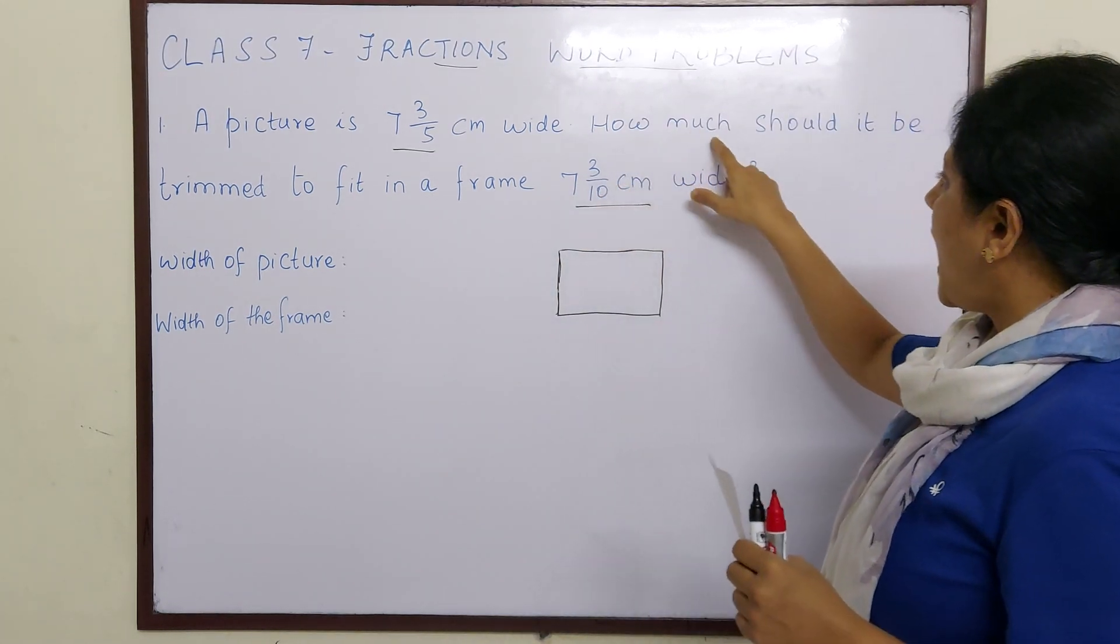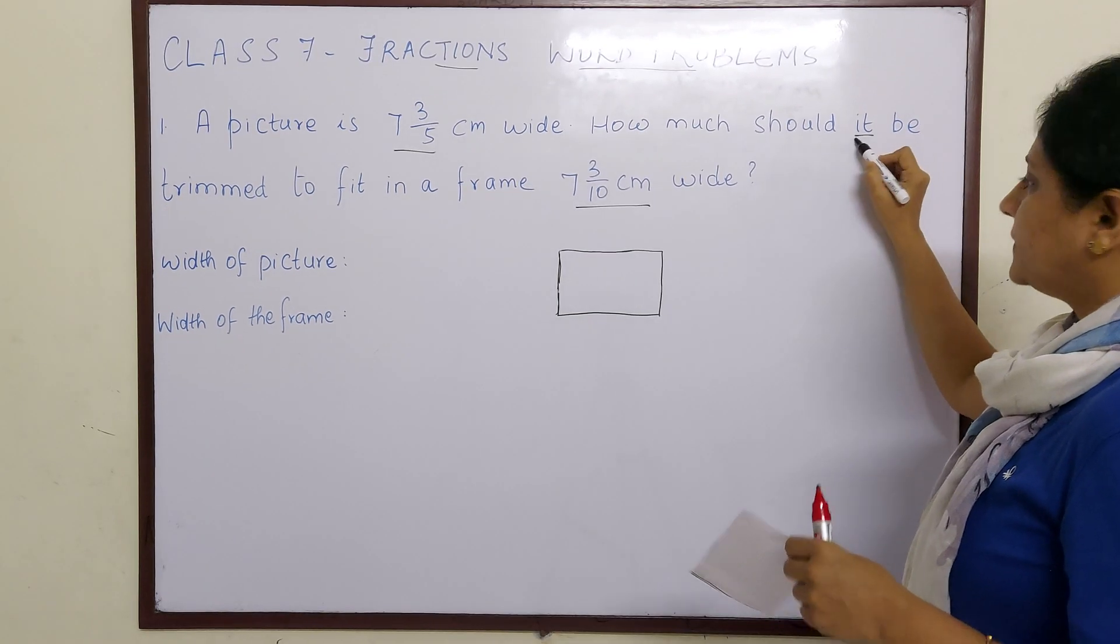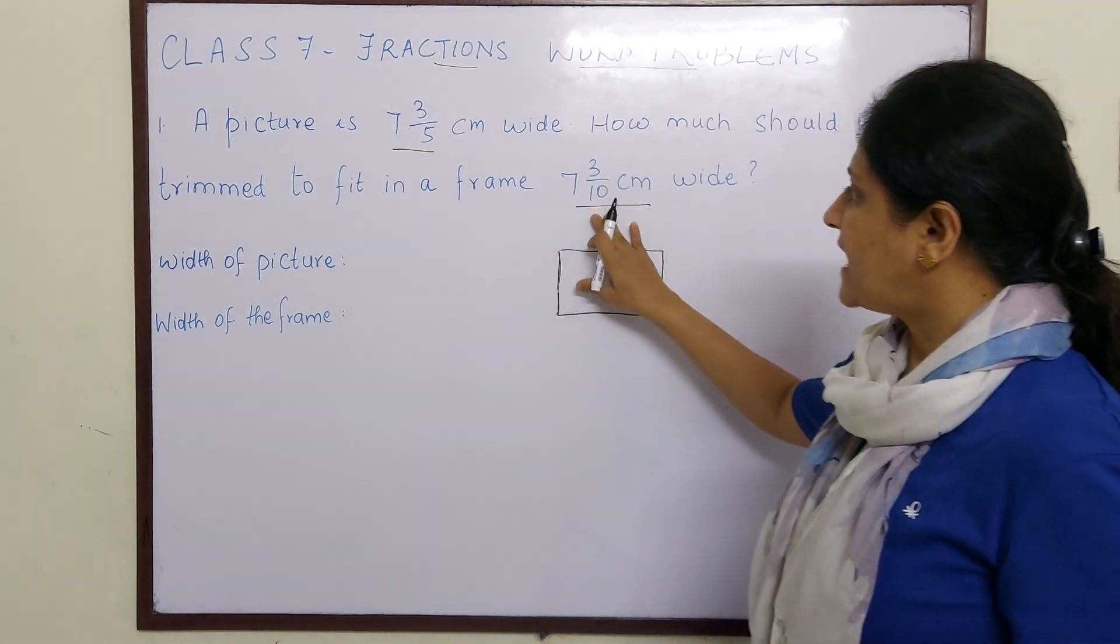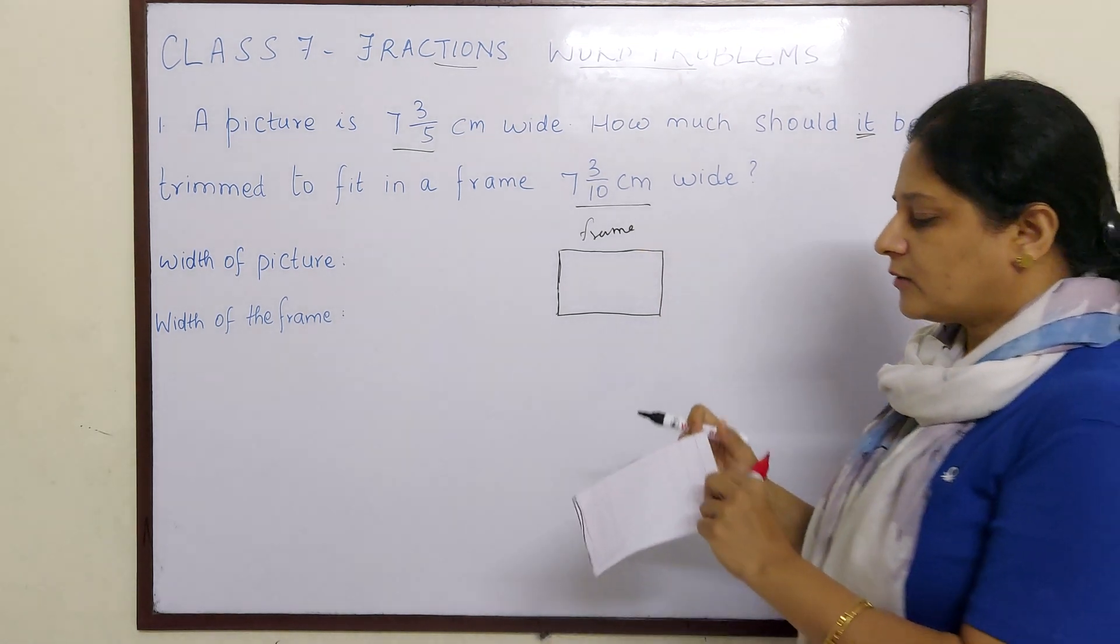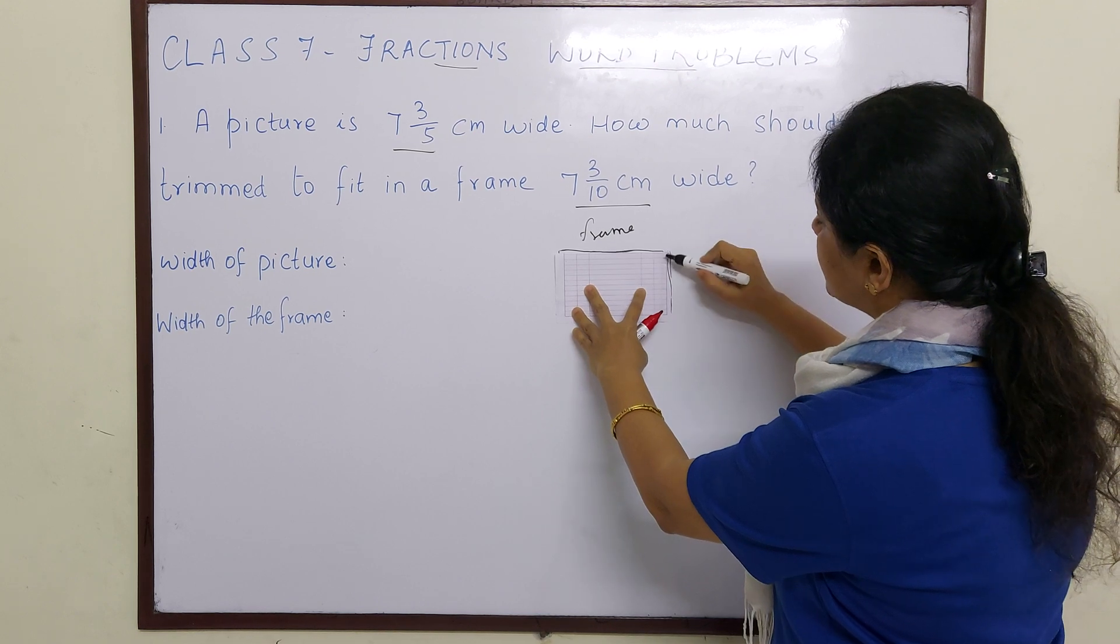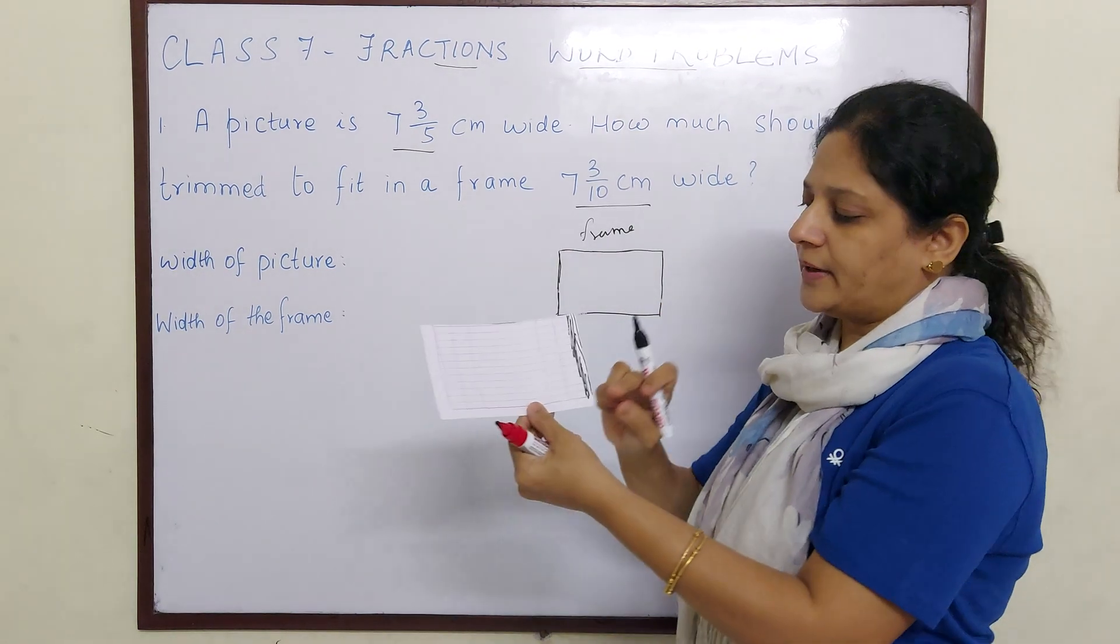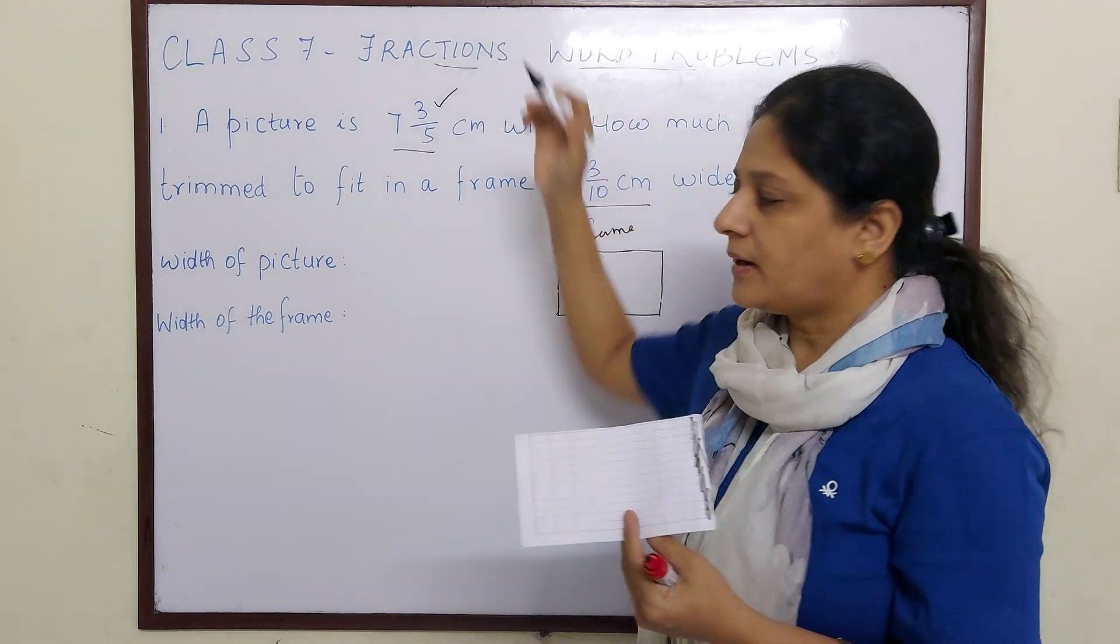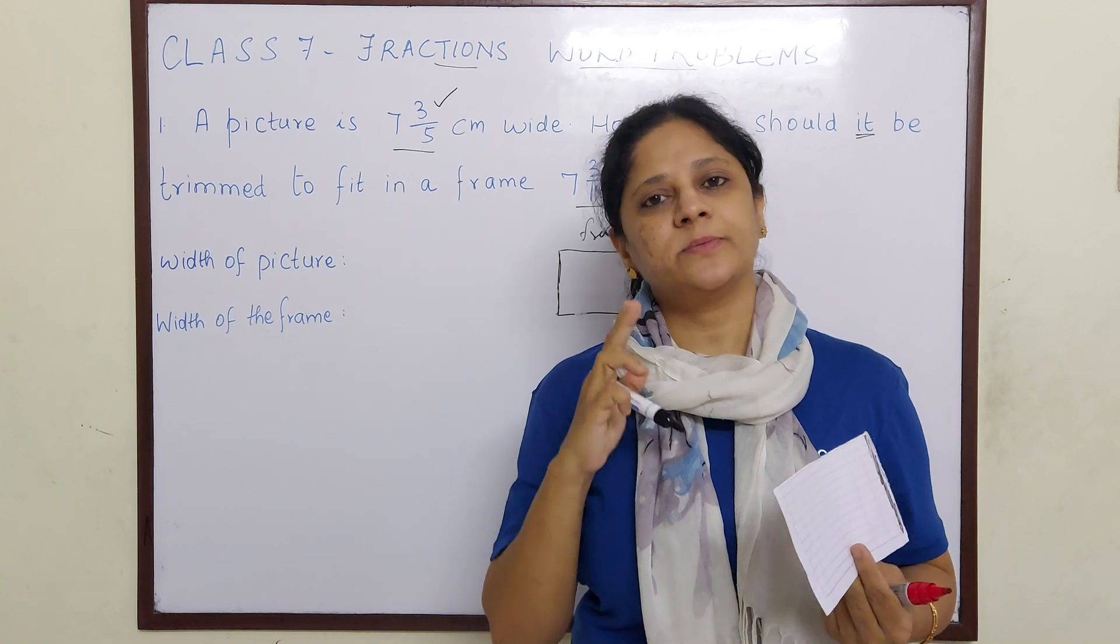Now they are asking us how much should it be trimmed? This picture has to be trimmed to fit in a frame 7 3/10 cm. Let us assume this is the frame and we are going to fit this picture into this. If you can see, this picture is a little big. So this part which I am shading, this has to be trimmed. From this what you understood children? The picture is the bigger number and that it has to be trimmed means it has to be cut.